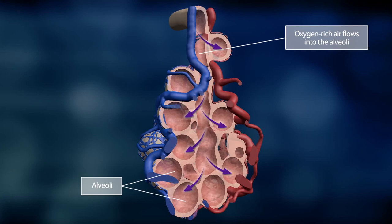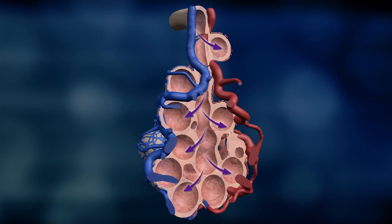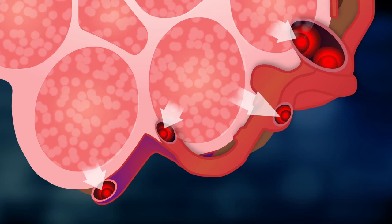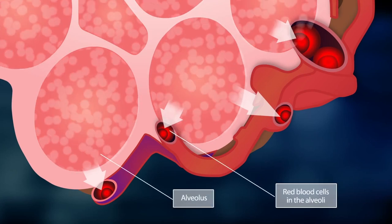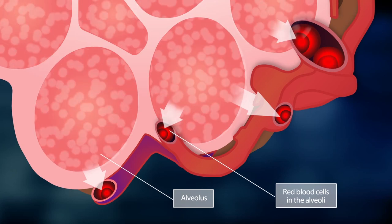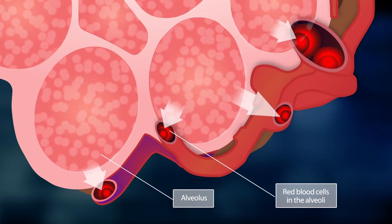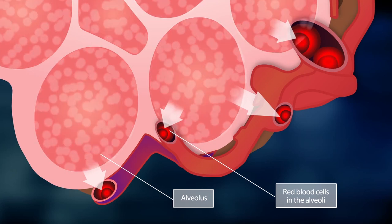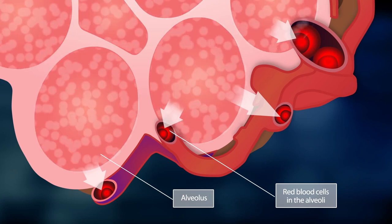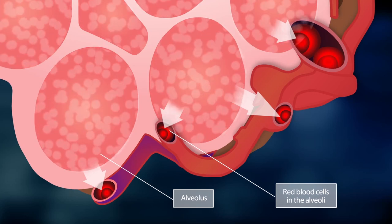The inhaled air is oxygen rich. Now the gas exchange between the air in the alveoli and the red blood cells from the capillaries takes place. During the gas exchange, oxygen from the air in the alveoli passes into the red blood cells. The blood is enriched with oxygen.